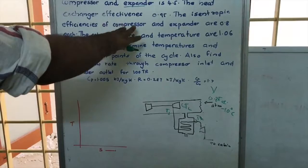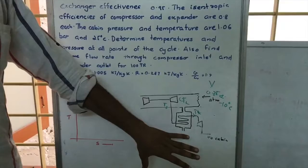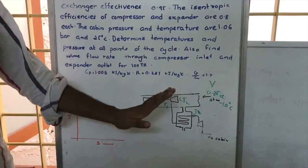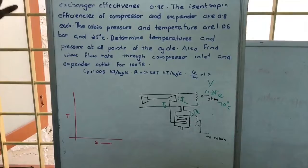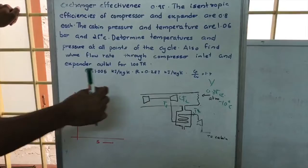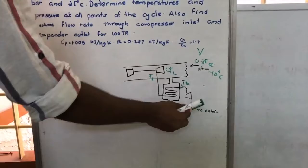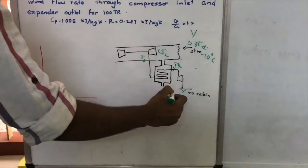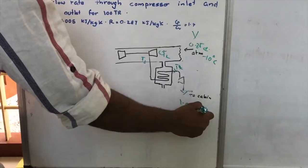The isentropic efficiencies of the compressor and expander are given. The compressor and expander will not work in a perfectly adiabatic fashion — there will be efficiency losses. The cabin pressure and temperature are 1.06 bar and 25 degree Celsius, which is the condition after the expander supplies air to the cabin.